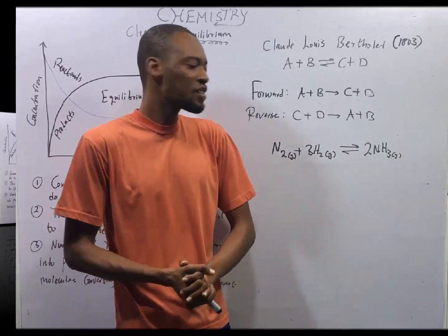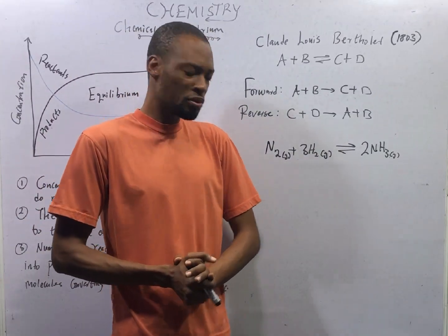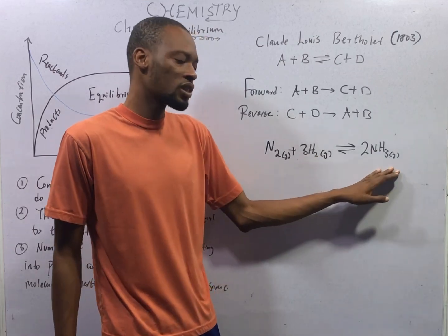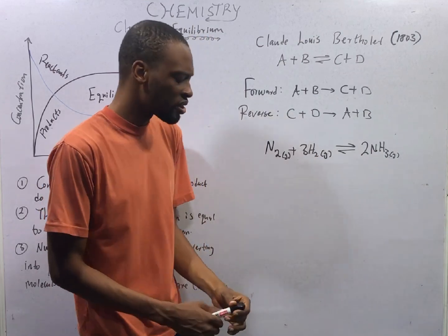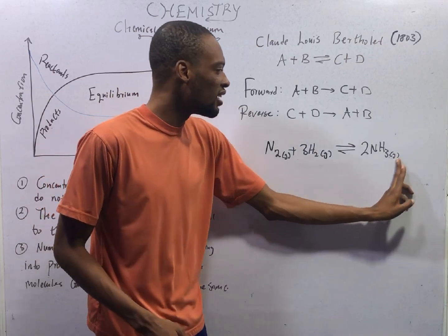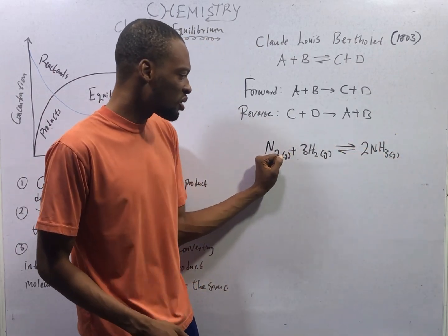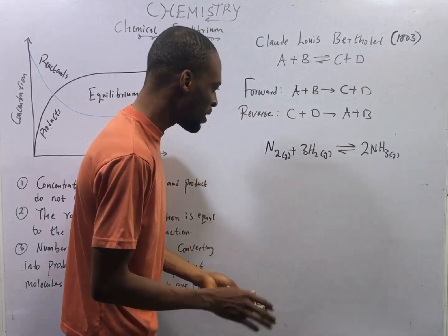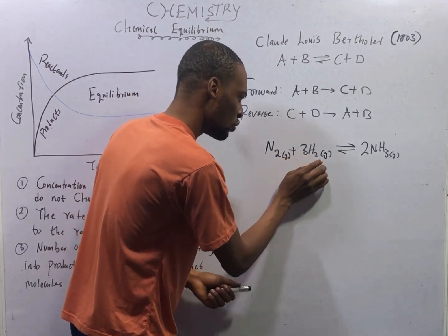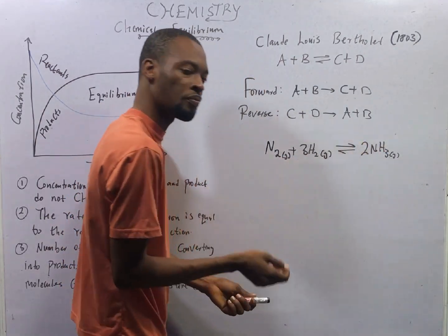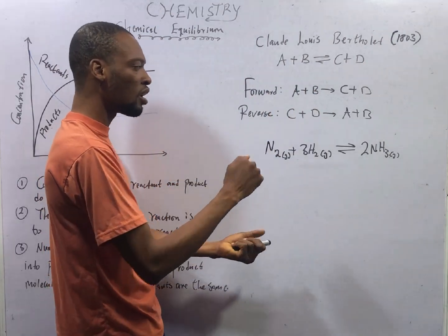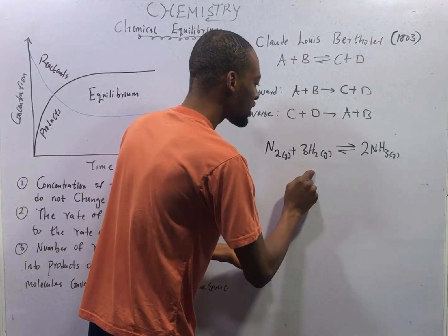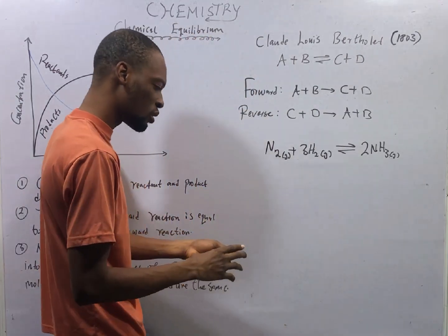Ammonia is formed via the Haber process. Nitrogen combines with hydrogen to give us ammonia, and this reaction is reversible because ammonia can break down to give us nitrogen and hydrogen. For the forward reaction: N₂ + 3H₂ → 2NH₃. For the reverse reaction: 2NH₃ → N₂ + 3H₂.